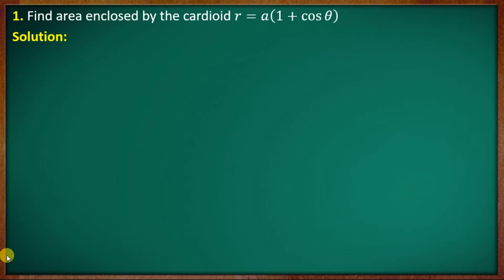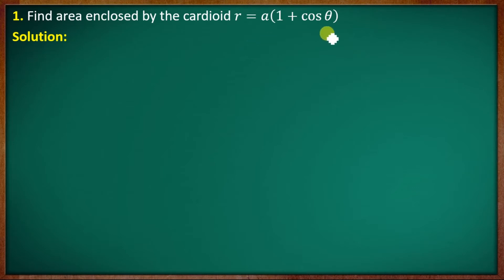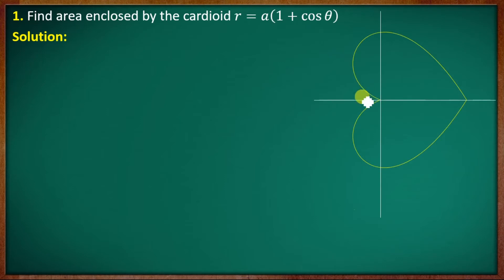The first problem: find the area enclosed by the cardioid r = a(1 + cosθ).